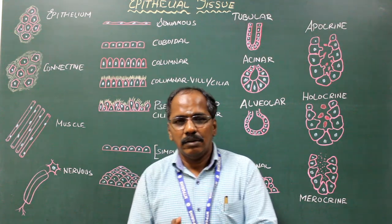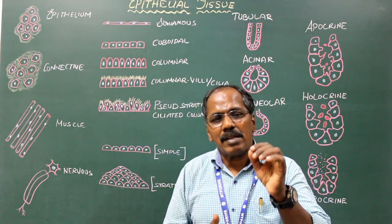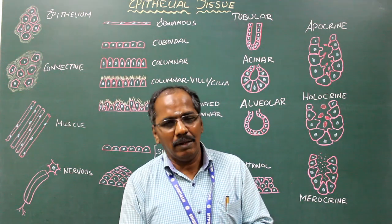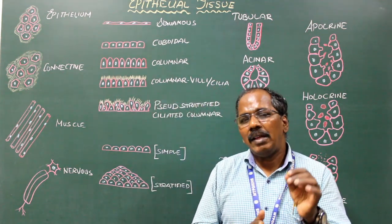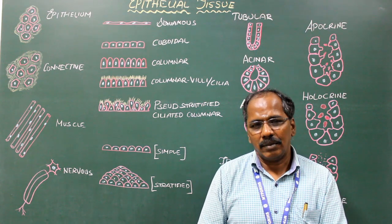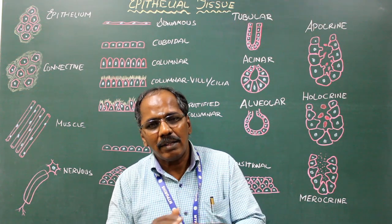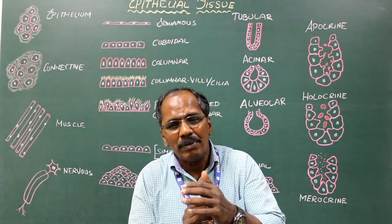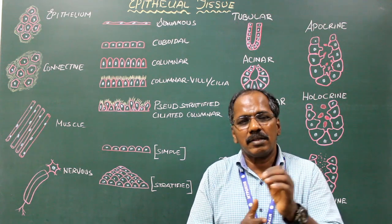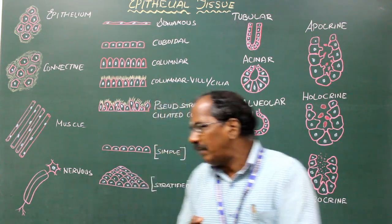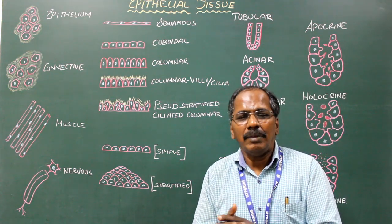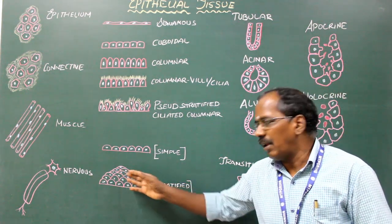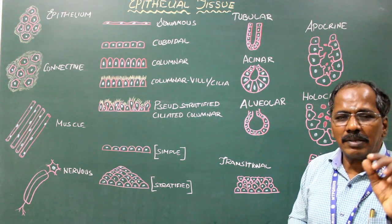Classification of epithelial tissue: epithelial tissue may be classified into covering and lining epithelium, and glandular epithelium or glands. Covering and lining epithelium covers the surface of any structure or organ, or lines the inner surface of the lumen of any structure or organ. It may be divided into two types depending upon the number of layers of cells and the shape of the cells.